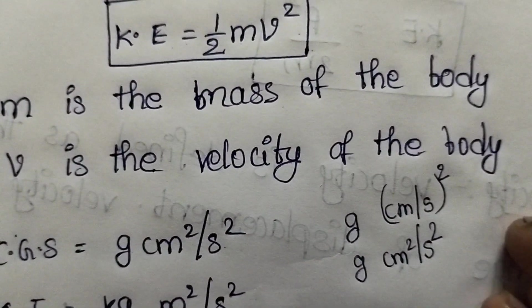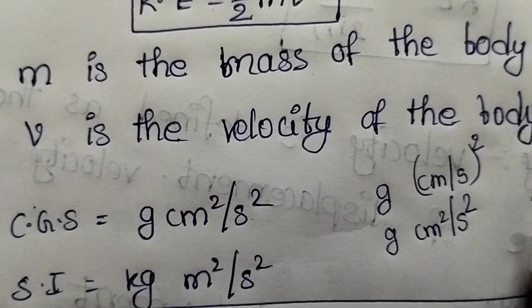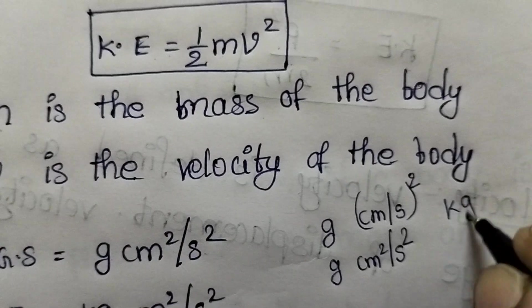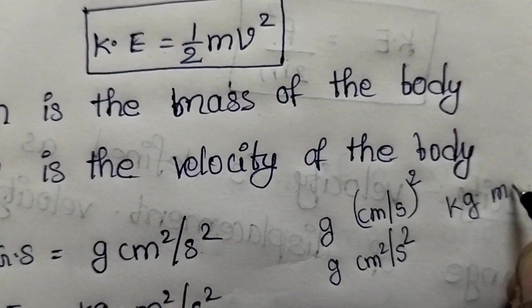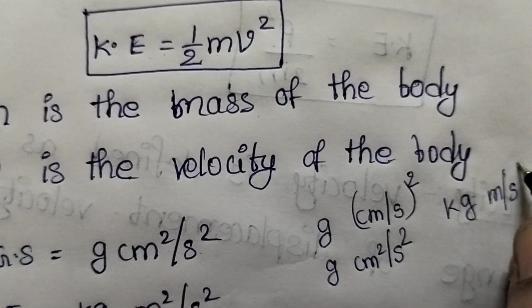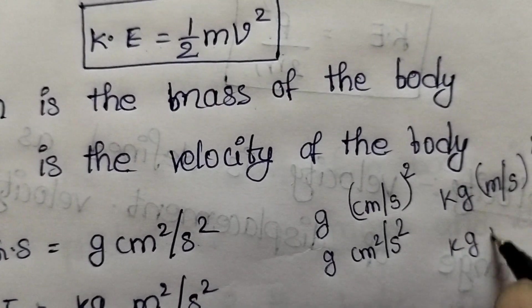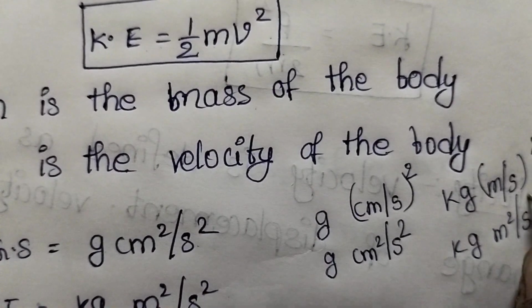And next, see that SI unit is kg meter square by second square. In SI system, mass is measured in kgs, and velocity units are meter by second whole square. So it's kg meter square by second square.